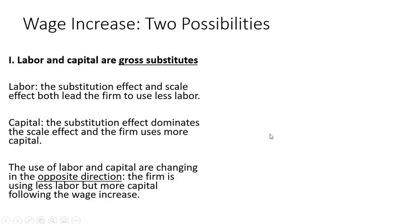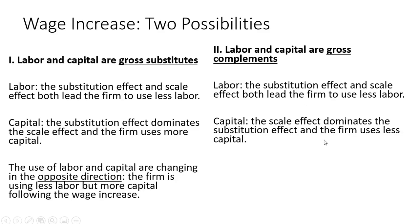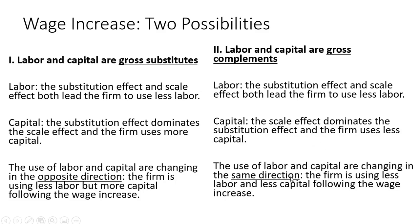Now let's look at the possibility of labor and capital being gross complements. Once again, for labor, the substitution effect and scale effect following a wage increase both lead the firm to use less labor. As for capital, if the scale effect dominates the substitution effect, the firm will also use less capital. So the use of labor and capital are moving in the same direction, and that occurs when the inputs are said to be gross complements.